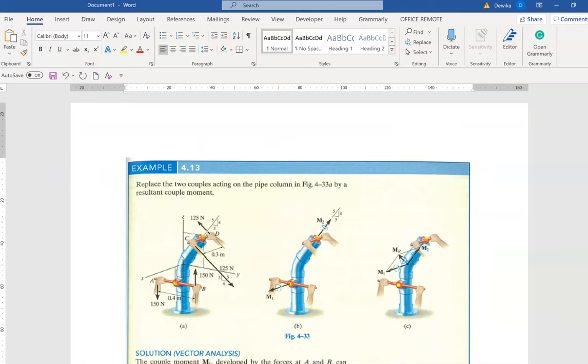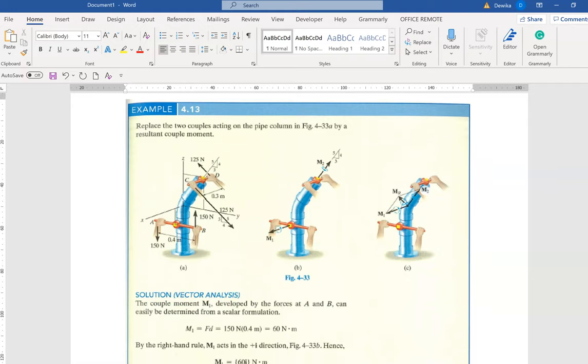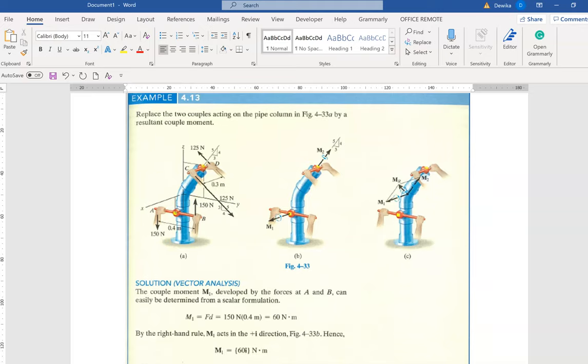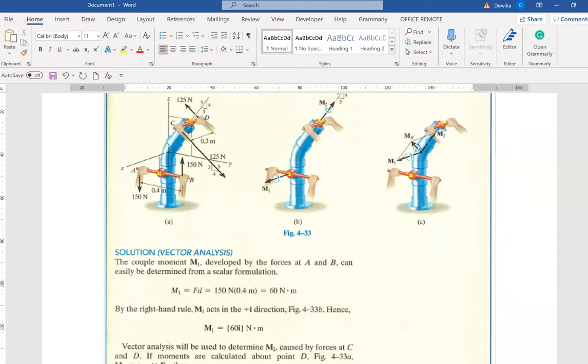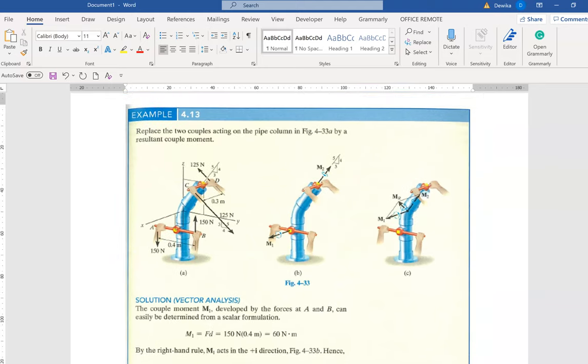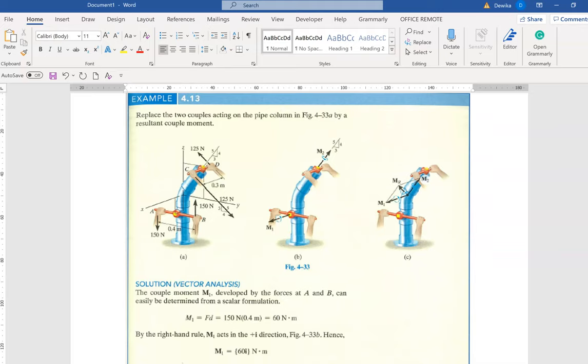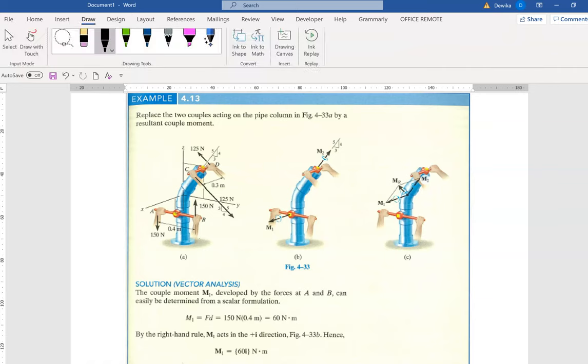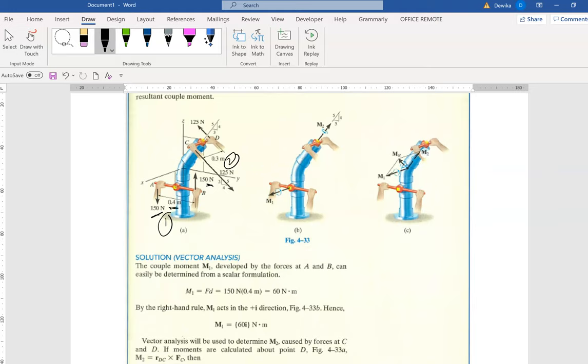We're going to move on to an example. This is example 4.13 from your textbook. I have skipped 4.10, 4.11, 4.12 because I feel they are easier, simpler. I want you to pay attention because we are going to use vector analysis to solve this question. It can be a bit tricky. There is a bit of visualization that's needed to solve this question. So we have got two couples forming. We have couple 1 and couple 2 forming here. So let's solve the easy one first. So we have 150, we have 150. They are opposing each other. They cancel off. The forces cancel off. So they make a perfect couple. So what is the distance between them? 0.4. So 150 multiply 0.4. We have 60 Newton. Settled.